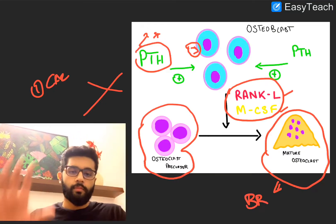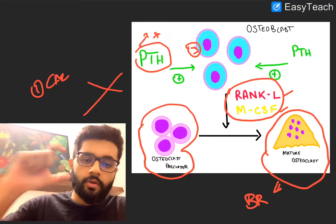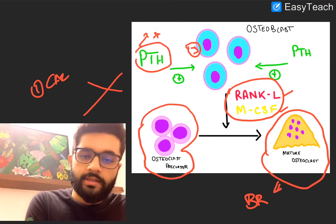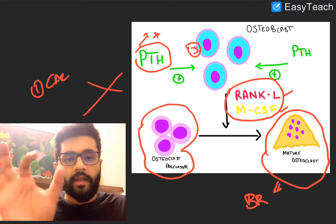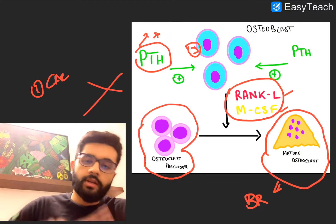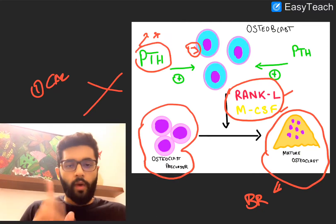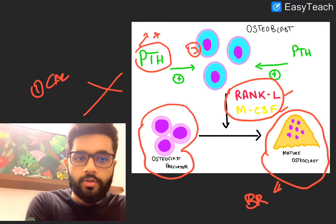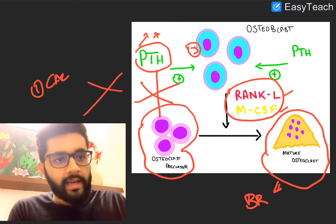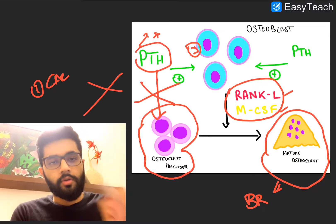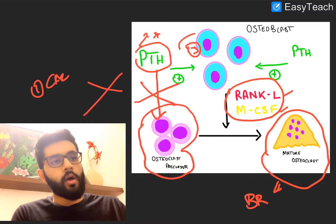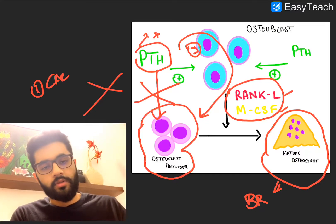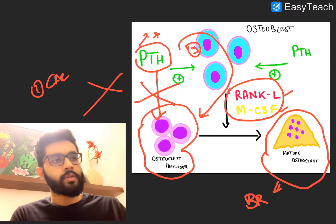To recap: parathyroid hormone acts on the osteoblasts, and these osteoblasts produce RANK-L and MCSF, which convert osteoclast precursor cells into mature osteoclasts. These mature osteoclasts then cause bone resorption, which increases blood calcium. In one sentence: PTH receptors are present only on osteoblasts, and PTH can never directly act on osteoclasts or osteoclast precursors. Parathyroid hormone acts only via osteoblasts, and it is osteoblasts that completely control the activity of the osteoclasts.